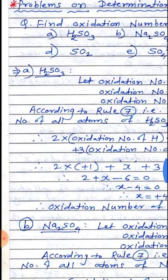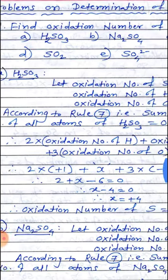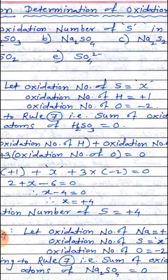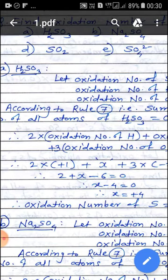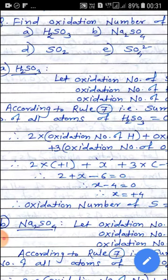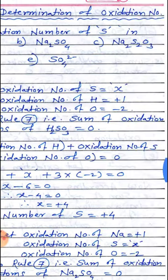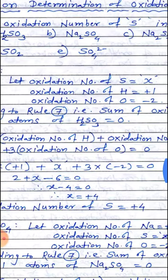These problems are very important and they are always asked in our examination for two marks. Generally, find the oxidation number of sulfur S in: A) H₂SO₃, B) sodium sulfate Na₂SO₄, C) Na₂SO₃, D) SO₂, and E) SO₄²⁻.